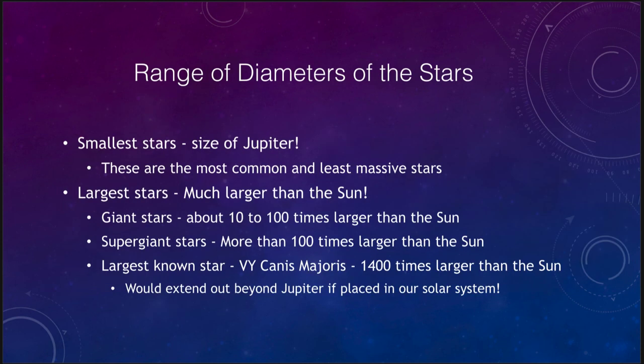What do we find when we calculate radii of stars? There's a big range. The smallest stars are actually the size of Jupiter. They're not much bigger than Jupiter in size, remember they are still more massive than Jupiter. These are the most common stars that we see. Largest stars are much larger than the sun. Giant stars are between 10 and 100 times larger than the sun. Supergiant stars are more than 100 times larger. The very largest known star, VY Canis Majoris, is 1400 times larger than our sun. It would extend out beyond Jupiter if placed at the center of our solar system.